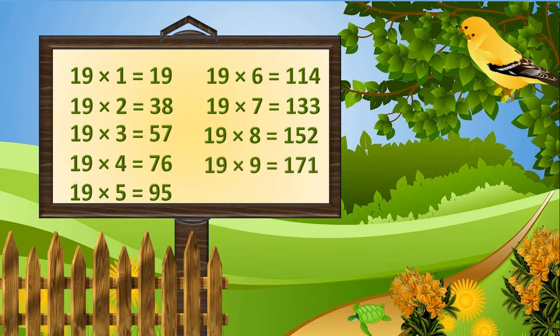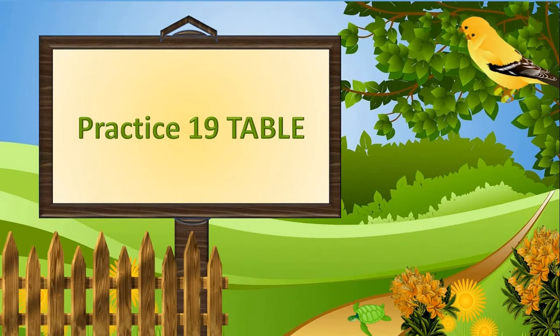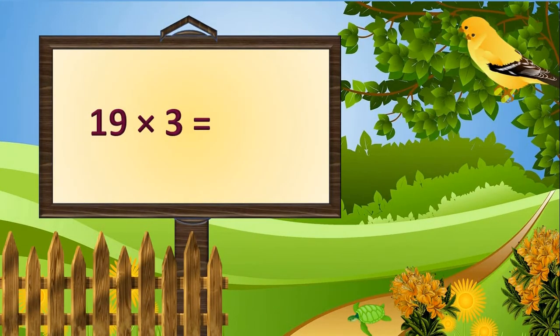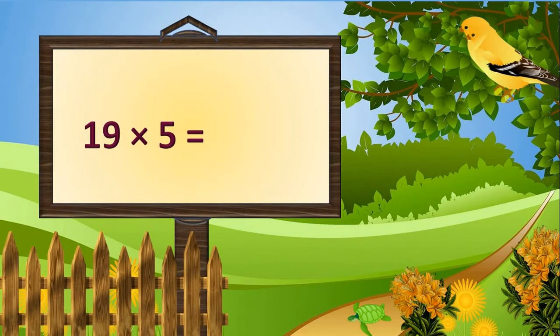19 nines are 171, 19 tens are 190. Practice the 19 table. 19 threes are? Yes, 57. 19 fives are?